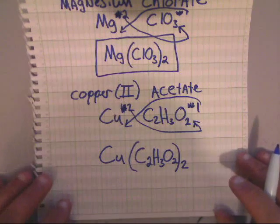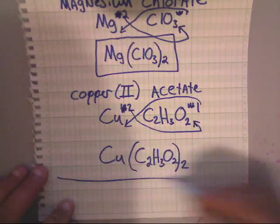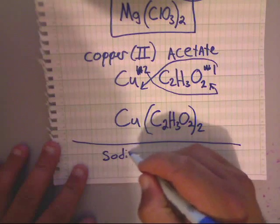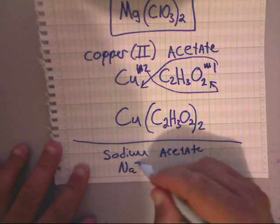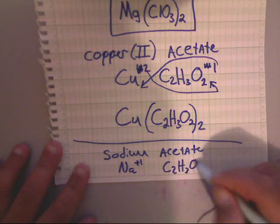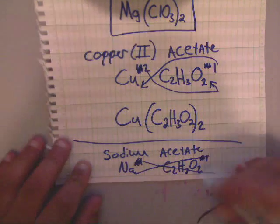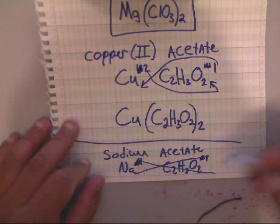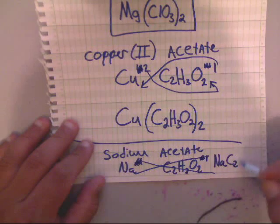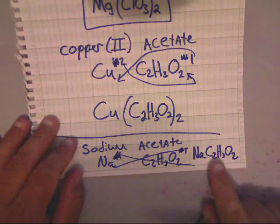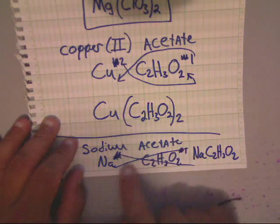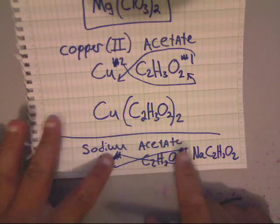Now there are situations where things do cancel out nicely. An example could be sodium acetate. Sodium is Na plus one. Acetate you've seen as C2H3O2 negative one. You can see that these numbers match, so all you have to bring down is ones, and you don't write down ones. If the numbers match, you don't write them down at all. So sodium acetate would just be NaC2H3O2. Notice that the set of parentheses are not needed here because there are no subscripts to bring down — the ones cancel out completely because they're identical.